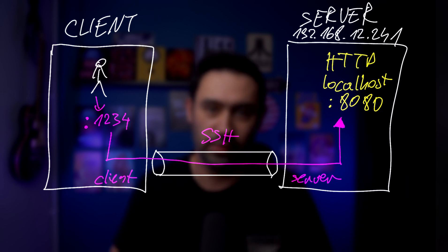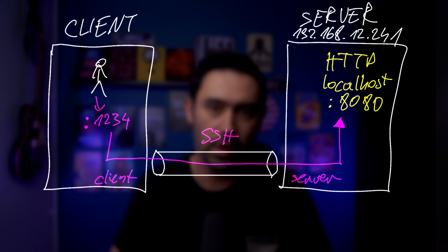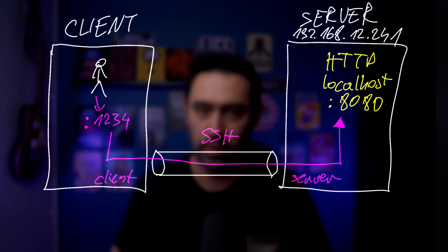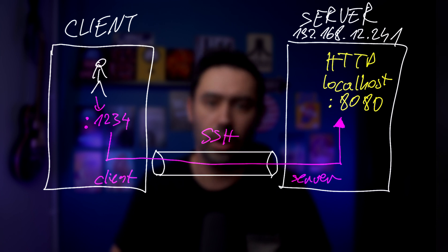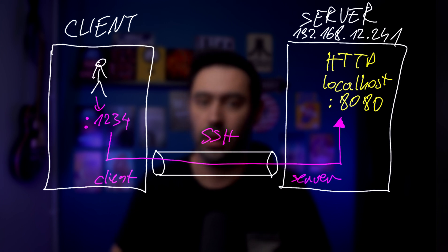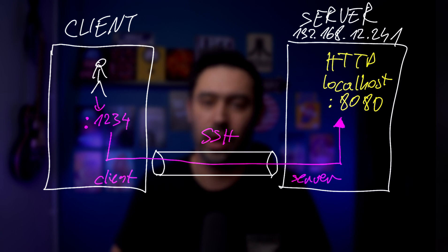This has many use cases. For example, accessing your database that is linked on an application interface to the management interface, or securing the connection to a legacy application. Please mind that the tunnel is encrypted, so if you have a legacy application that does not encrypt the traffic, using SSH local port forwarding is a great option to increase the security. Your traffic will be sent encrypted.